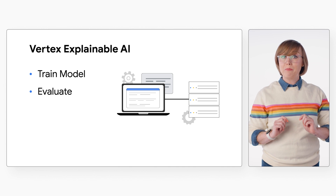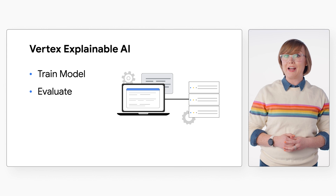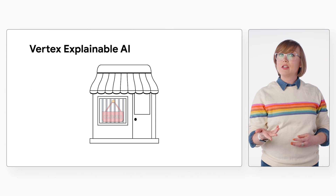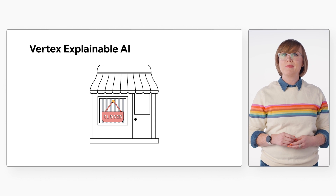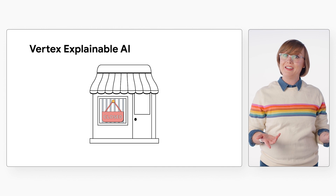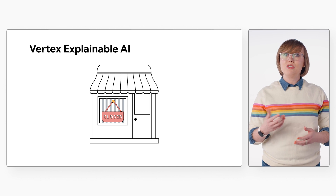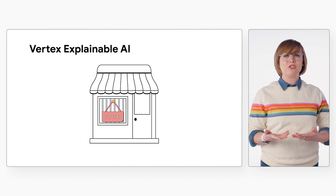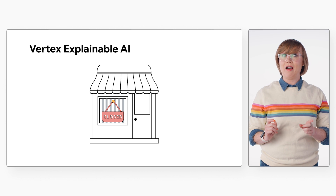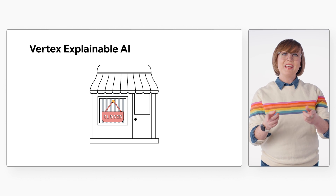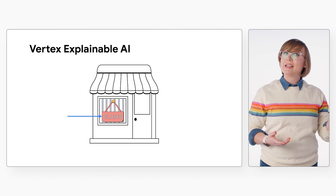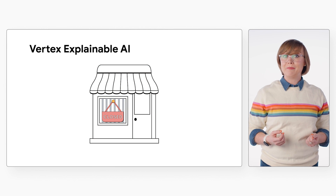That's where example-based explanations and feature attributions come into play. Let's take, for example, a machine learning model that predicts whether a coffee shop is open or not. With feature attributions, you could get an explanation like: the coffee shop is not open because the door is locked. In this scenario, the coffee shop is a feature, and the closed door is an attribute of that feature.